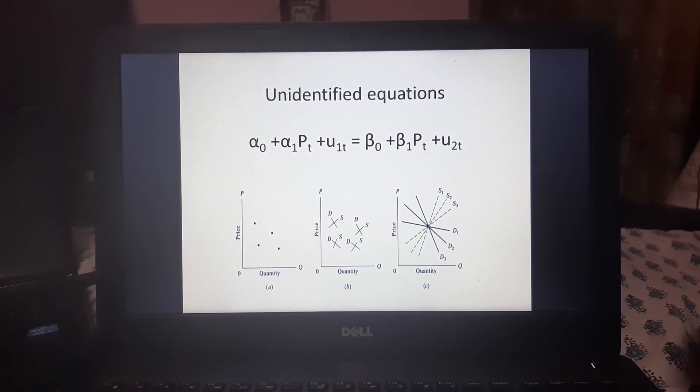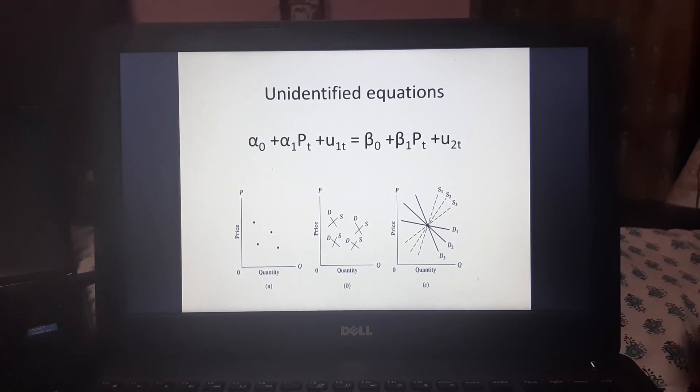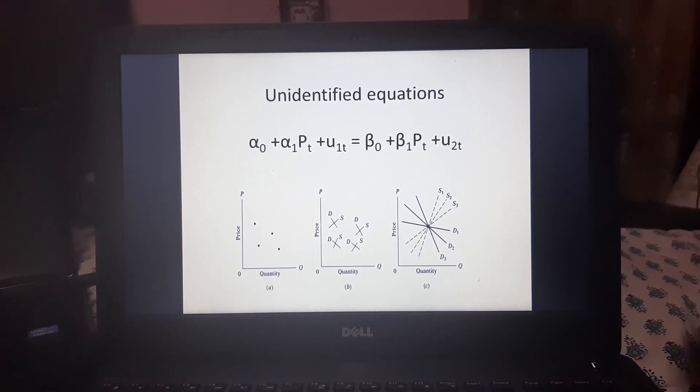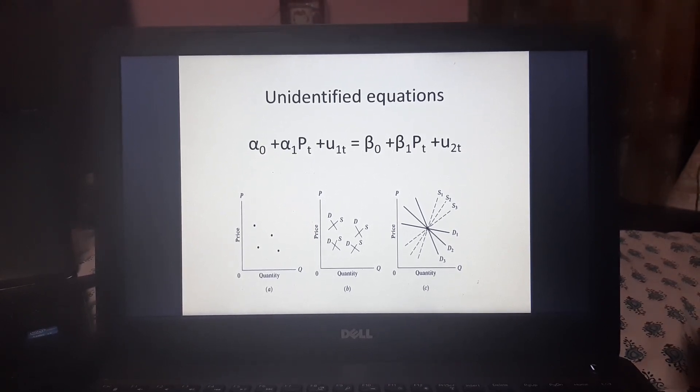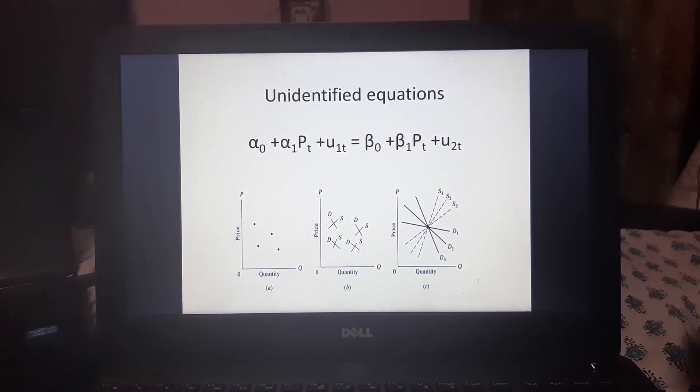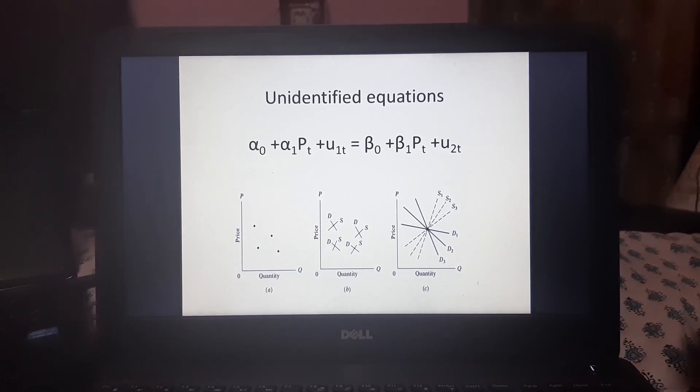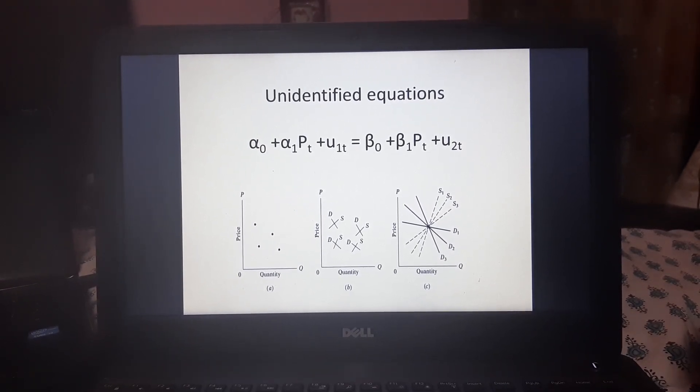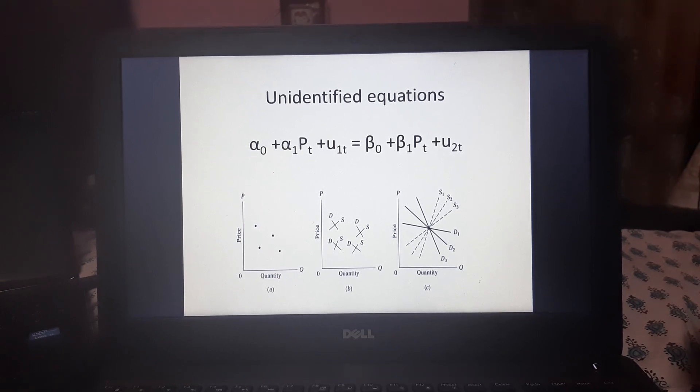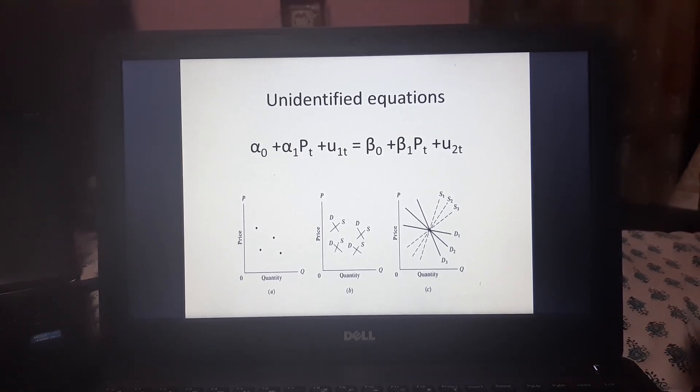So in the three graphs shown in the picture, you can see that in figure A, the scatter diagram is shown where there are four combinations of price and quantity. So we do not know which of the following points is being satisfied by the given demand and supply equilibrium. Then in figure B also, the same scatter points shown, they are showing the different intersection points of demand and supply curves and we do not know which one satisfies the above equation.